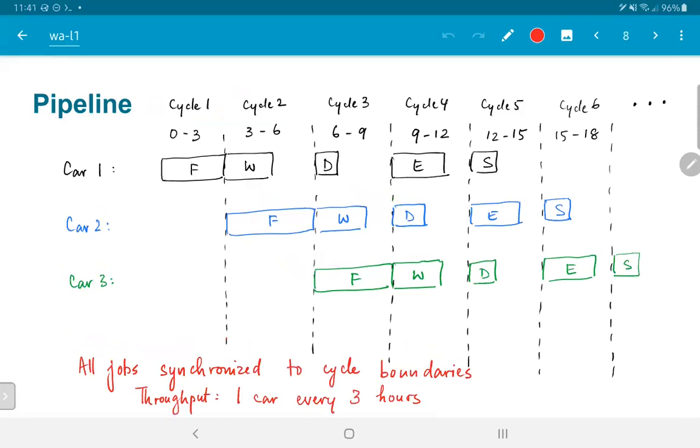Instead, what we do is to construct an explicit pipeline where we think in terms of cycles of work. The first cycle is given the time from zero to three, the second cycle from three to six, the third from six to nine, and so on. In this way, we can clearly assign tasks. Technician one needs to work on car one during cycle one. The same technician then moves on to car two in cycle two, and then to car three in cycle three. Technician two, on the other hand, works on car one in cycle two, and then moves on to car two in cycle three, and car three in cycle four, and so on.